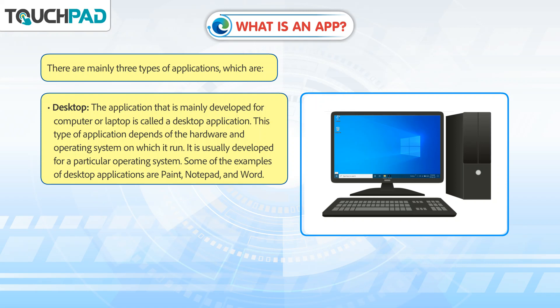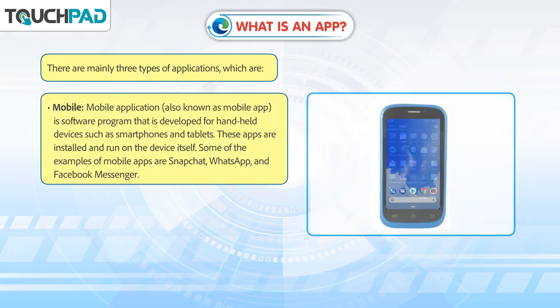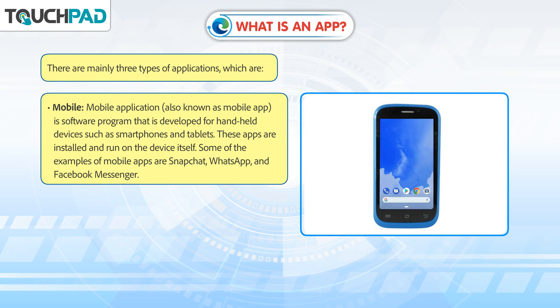The application that is mainly developed for a computer or laptop is called a desktop application. This type of application depends on the hardware and operating system on which it runs. It is usually developed for a particular operating system. Some examples of desktop applications are Paint, Notepad, and Word.